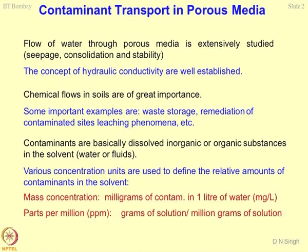It is important to understand what causes this flow to occur. Basically, contaminants are dissolved either in inorganic or organic substances in the solvent, and the solvents are either water or other fluids. Various concentration units are used to define the relative amounts of contaminants present in the solvent. The first way of defining concentration is mass concentration, where you use milligrams of contaminant in one litre of water — this is known as milligrams per litre.